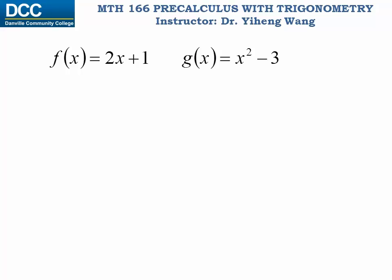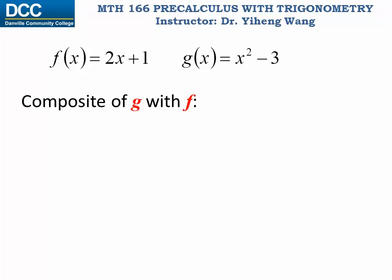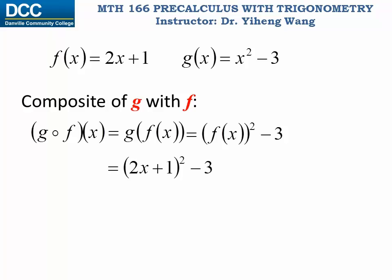On the other hand, if we want to find the composite function g composed with f — note the switched order — this is denoted by g circle f, and equals g of f(x). At the independent variable position of g we put in f(x). Substituting, we have f(x) squared minus 3, and since f(x) equals 2x plus 1, we substitute that in, rearrange and simplify, and get 4x squared plus 4x minus 2. As you can see, this is not the same as f composed with g.